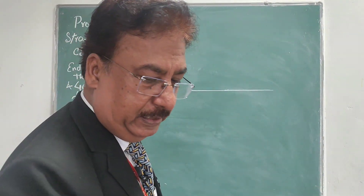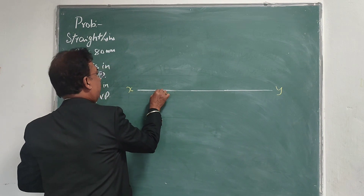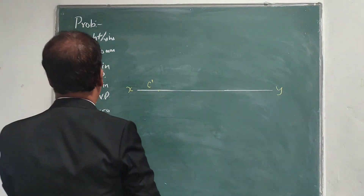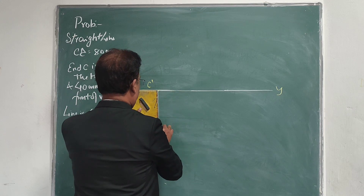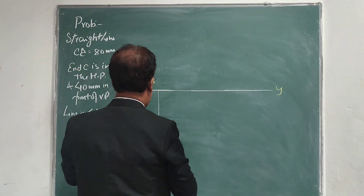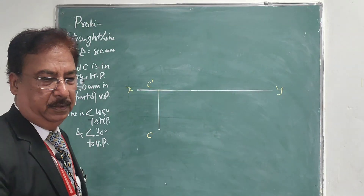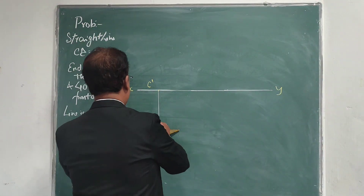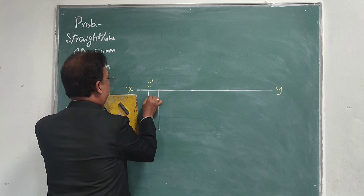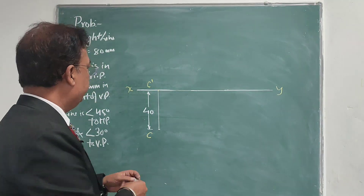I am going to draw the first point C and its front view. First, I will draw the reference line XY. Since point C will be on the HP, C-dash will be on the XY line. Since I have supposed the line is on the HP and parallel to the VP, I will draw its front view on the reference line.